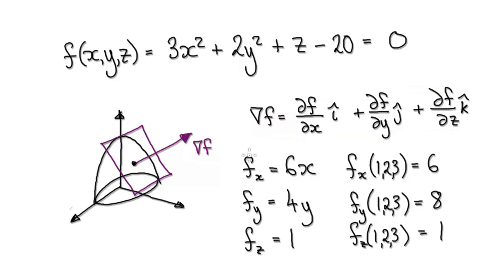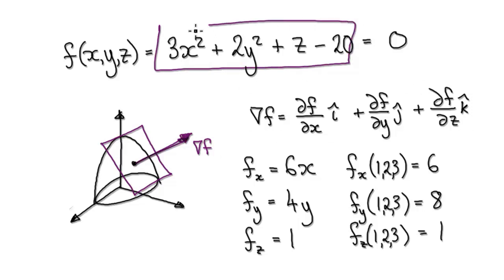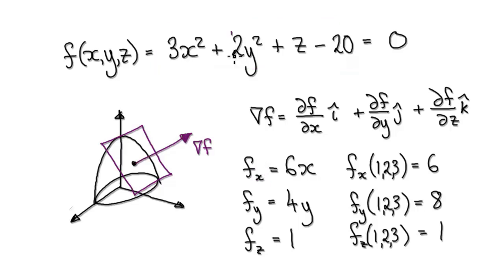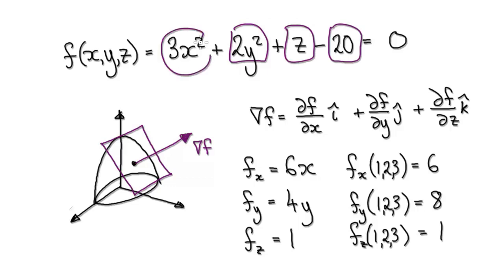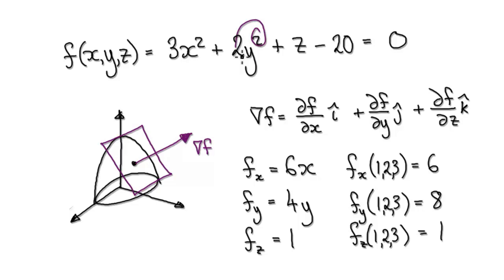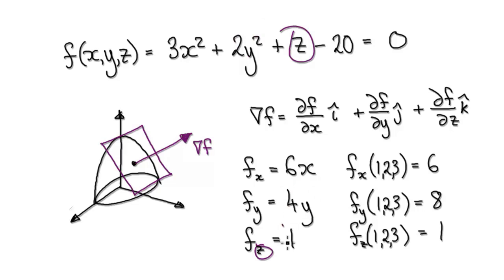To work out the gradient vector, looking at our function, partially differentiate it with respect to x — everything else is a constant — so that gives you 6x. Partially differentiate with respect to y, that would be 4y. And partially differentiate with respect to z, that would just be 1.